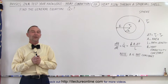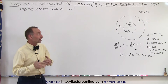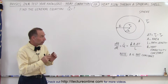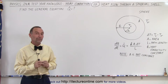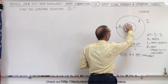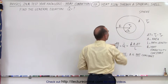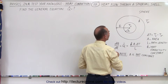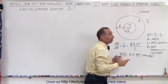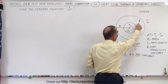Welcome to Electron Online. Now we're ready to try to find the heat flow through a spherical shell. We have a hollow sphere where the inside radius is A, the outside radius is B, the outside temperature is T sub O, the inside temperature is T sub I, and it has a heat conductivity constant K.